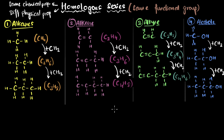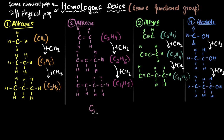Now let's write a general formula for these three homologous series. Let's start with the alkenes because that's the simplest. For alkenes, the ratio of carbon to hydrogen shows that hydrogen is always twice that of carbon: C₂H₄, C₃H₆, C₄H₈. So the general formula for any alkene would be CₙH₂ₙ.